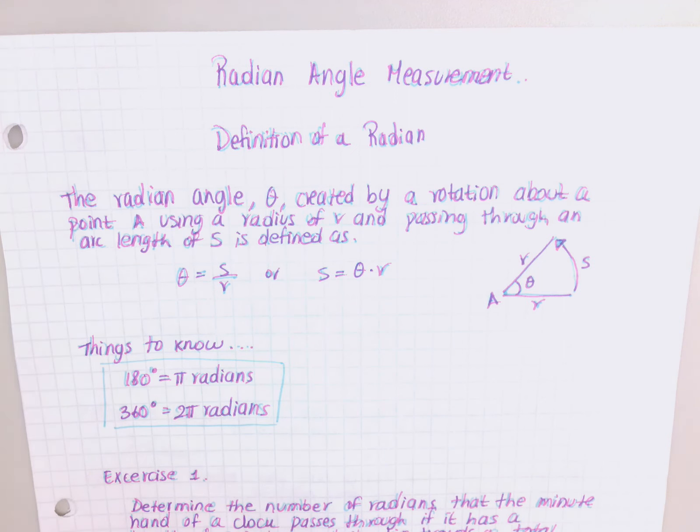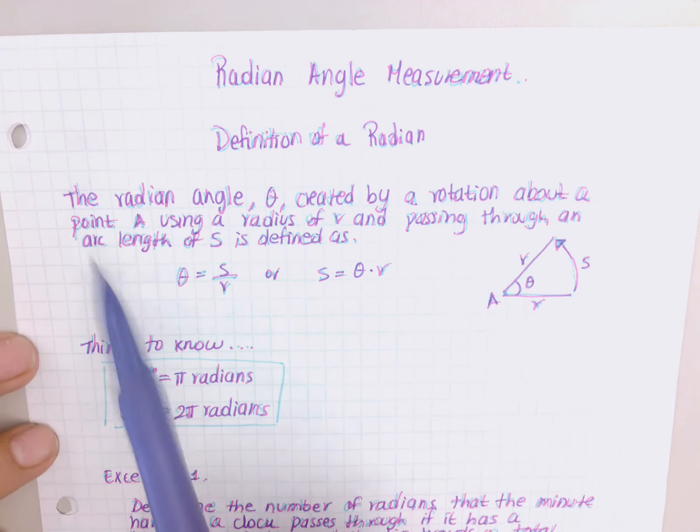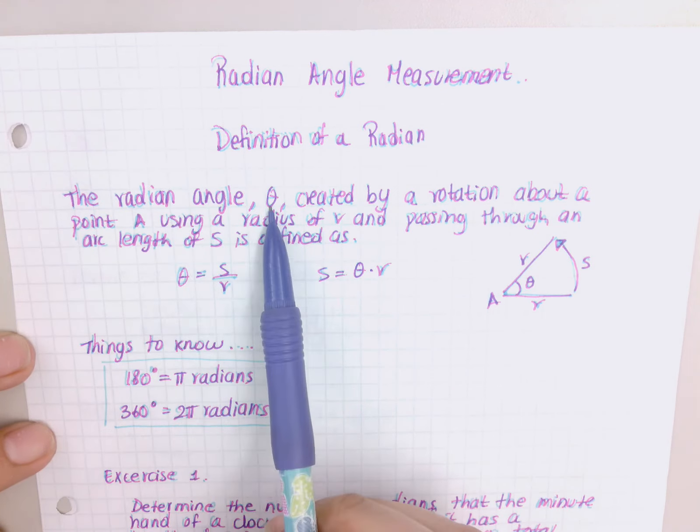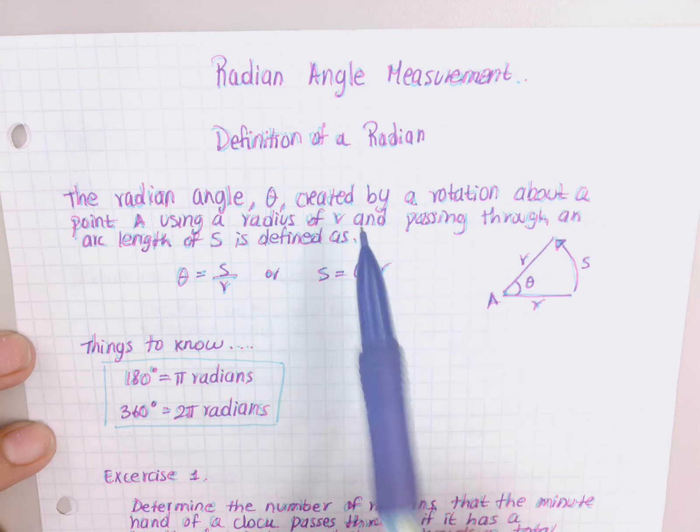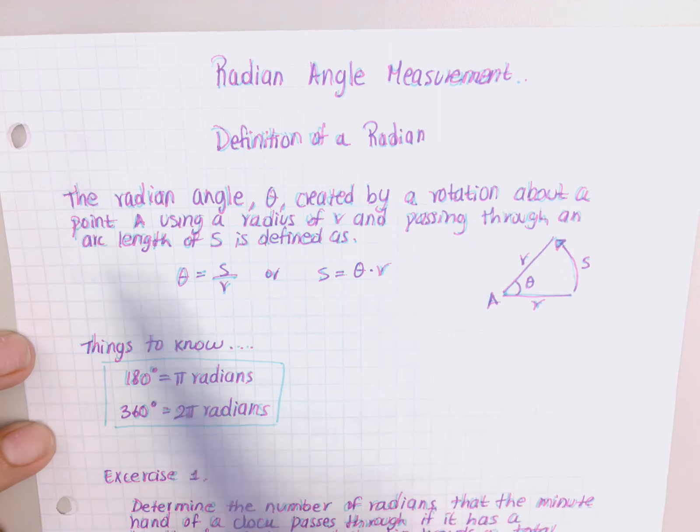Now we're just going to use it in algebra too. Okay, so the definition of a radian: the radian angle, called theta, it's like a little circle with a line between it, created by a rotation about a point A.